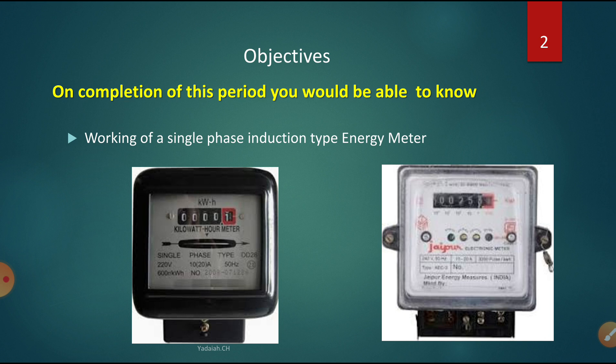In the previous class, we have seen the different types of energy meter constructions. From an analog point of view, we have seen that the energy meter consists of mainly four systems: one is the driving system, the moving system, the braking system, and the recording system.